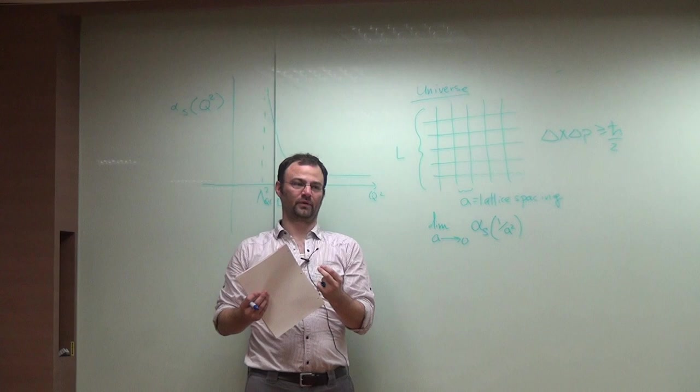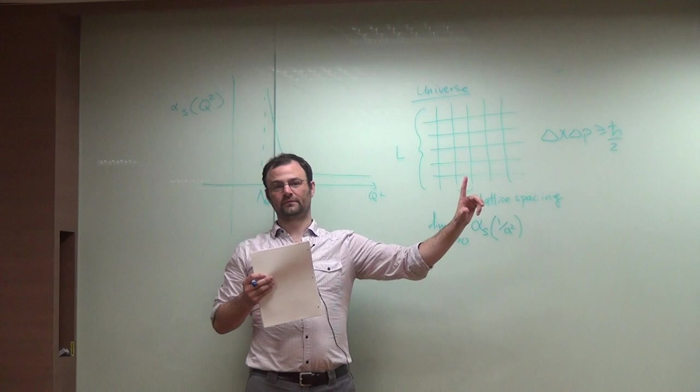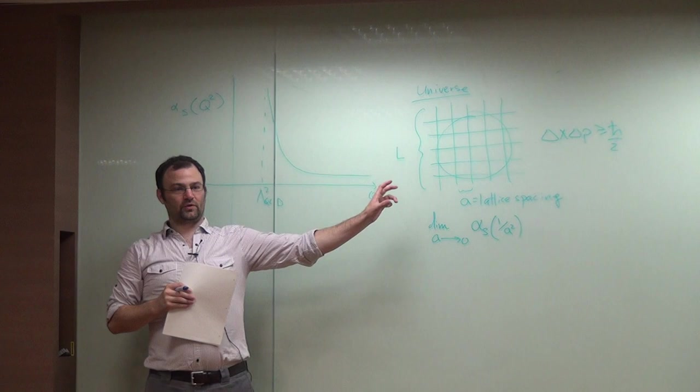So what that means is that if you take an arbitrarily small scale, you know exactly the theory you want to write in the computer. Because as A goes to zero or Q squared goes to infinity, the theory actually decouples. It becomes a theory of free gluons and free quarks. So you know the exact theory to write in the computer. That's the important point.